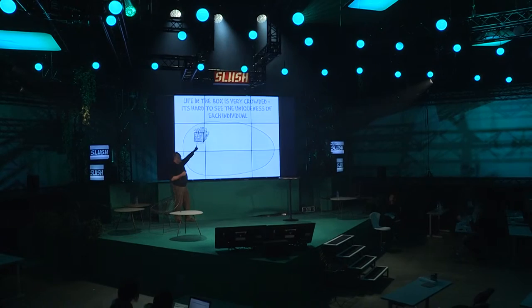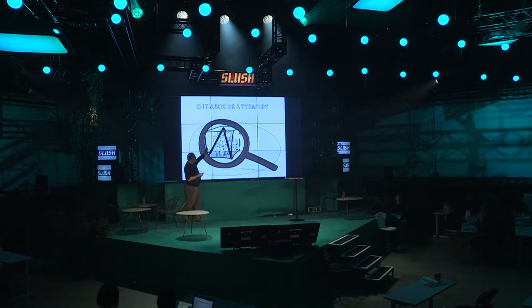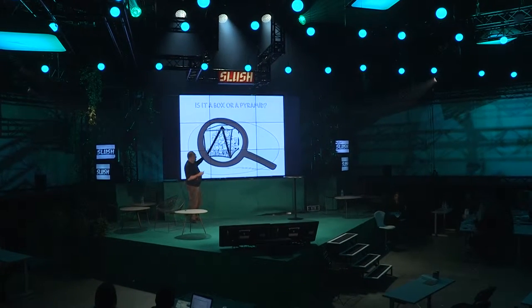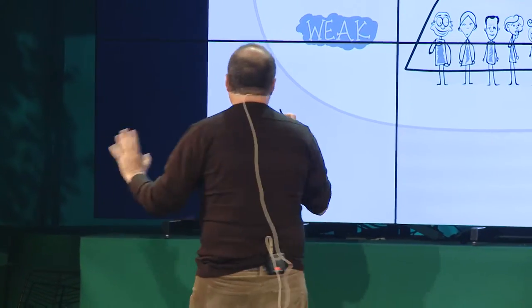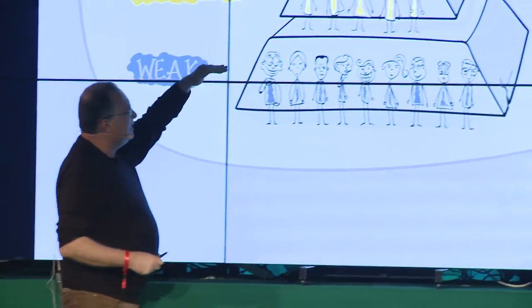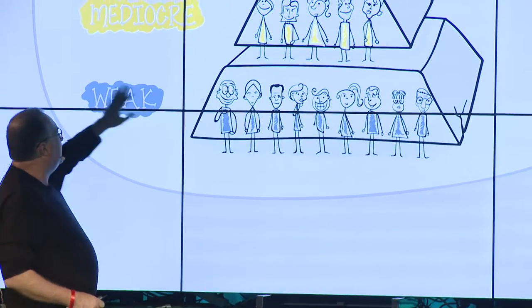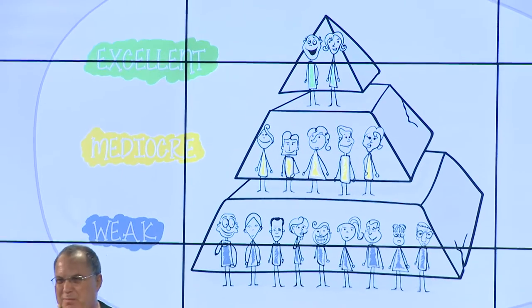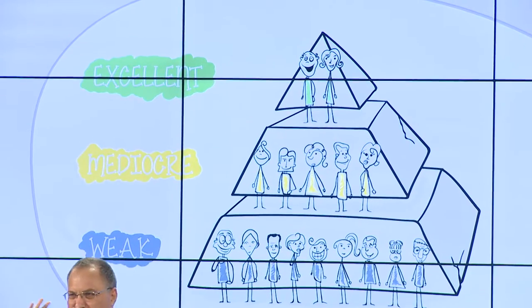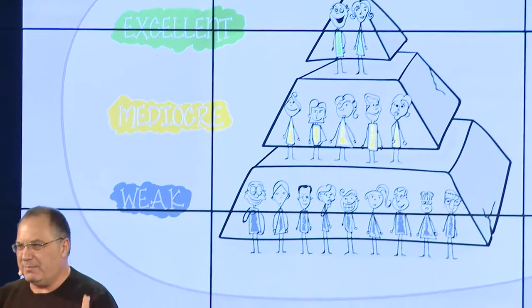If you look inside the box carefully, you find that it's not a box — it's a pyramid. What does a pyramid mean? Inside the box, the children learn that some of them are weak, mediocre, and excellent.